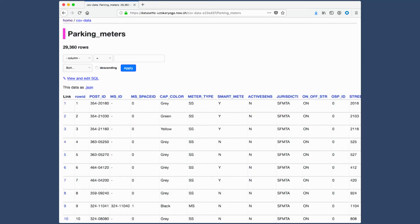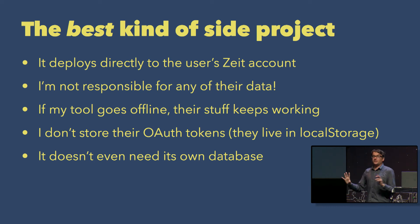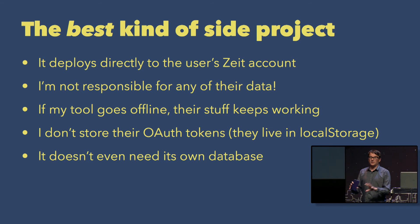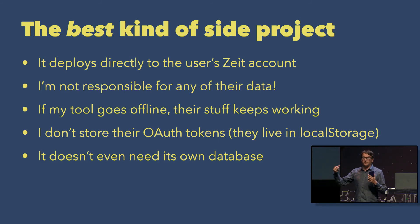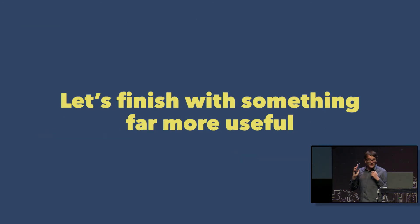I do a lot of side projects, and I've learned from painful experience that the problem with side projects is the moment you have user accounts and people start using them, it's not a hobby anymore — you're on the hook if it breaks. Datasette Publish is the absolute best kind of side project because it deploys to the user's Zyte account, not mine. I don't see the data, I don't store the data, I'm not responsible for it. If the tool goes offline, everything people have already deployed keeps on working. I don't even store OAuth tokens — I keep that in local storage in the browser. Not having a database is a wonderful thing.